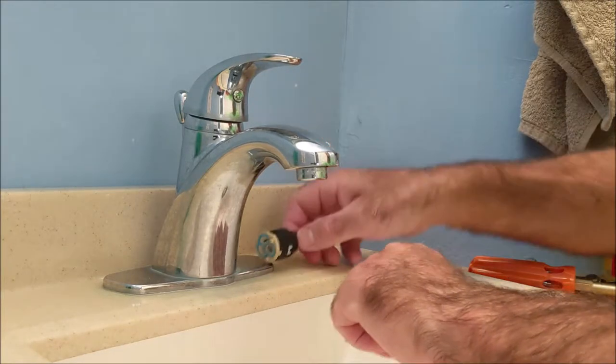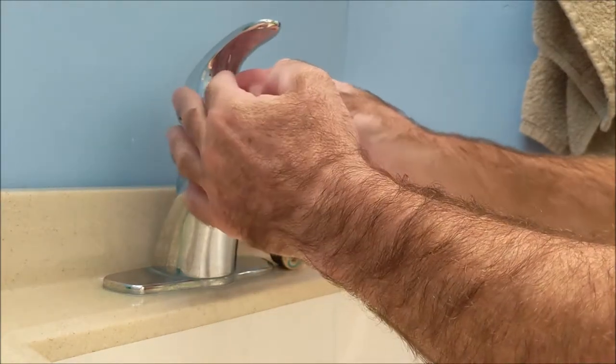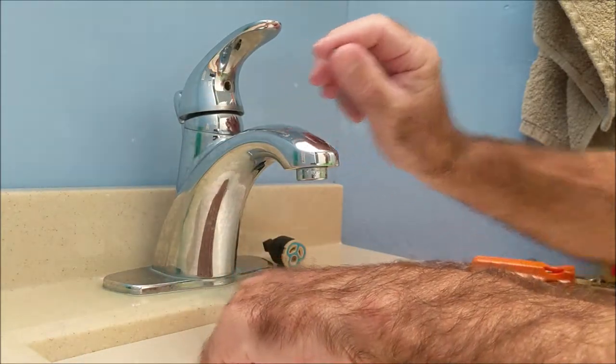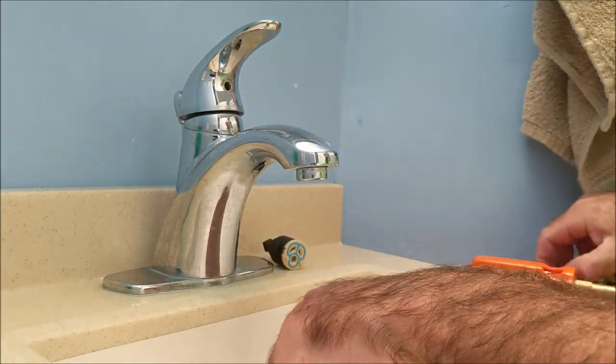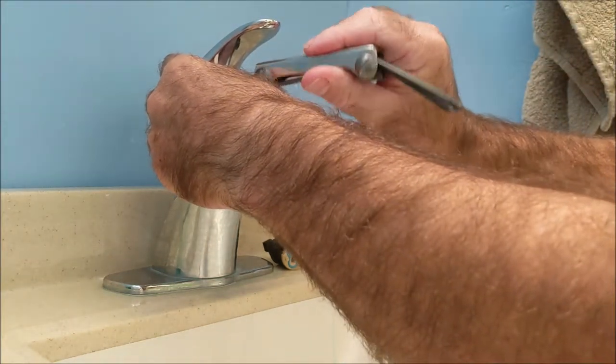Where I'm going to start right here is right under the faucet here. There's a little chrome tab that's just a pressure fit that comes out and then a hex key to pull off the handle.